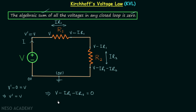Now you understand how to find the KVL equation, but every time we are not going to analyze the circuit like this. There are some conventions, and following these conventions you can write down the KVL equation directly. Here we have followed the convention in which we consider the rise in potential as positive.